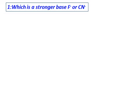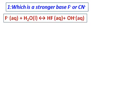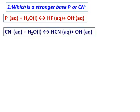So the first question you are going to do is, which is the stronger base, F⁻ or CN⁻? In order to do that, let's just write the equation of them as bases. So F⁻ reacts with water to give you HF and OH⁻. And CN⁻ gives you HCN and OH⁻.